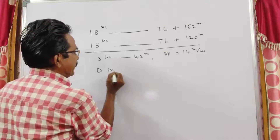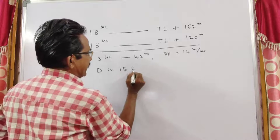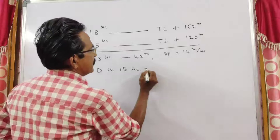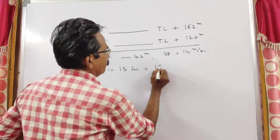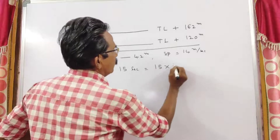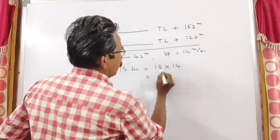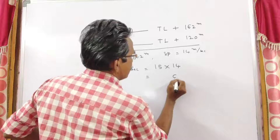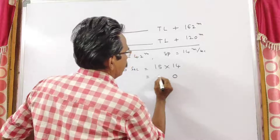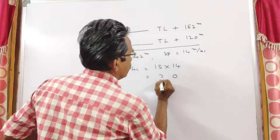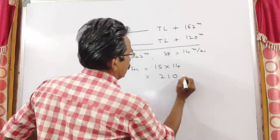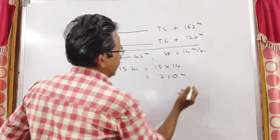Distance traveled in 15 seconds is equal to 15 into 14, that is 210 meters.